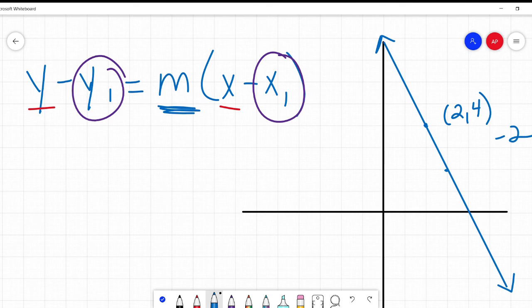So there is my line. Two, four, and it's a slope of negative two. What is the equation of that line? Well, I can use my point slope form. I just realized my circle went right perfectly over the parentheses. I couldn't do that again if I tried.